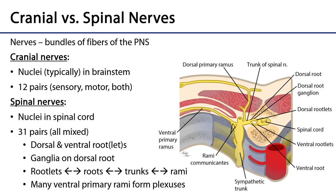First and foremost, let's distinguish between cranial and spinal nerves. Cranial nerves have their nuclei in the brain, largely in the brain stem, and one of them — the accessory nerve — in the brain itself. There are 12 pairs of them and they may each be sensory, motor, or mixed — so both sensory and motor. Spinal nerves, on the other hand, have their nuclei within the spinal cord. There are 31 pairs of them and they are entirely all mixed, so they have both sensory and motor components.